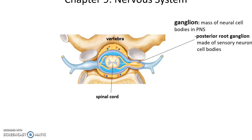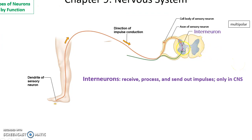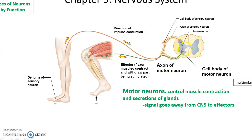A ganglion is a mass of neural cell bodies clumped together in the peripheral nervous system. An example is the posterior root ganglion, found in or near the vertebral canal. Types of neurons can also be defined by their function. Sensory neurons carry a sensation from the receptor up to the central nervous system — sometimes the sensory neuron itself is the receptor. This will then synapse with potentially an interneuron. Interneurons are the neurons found in the spinal cord and in the brain; they receive, process, and send out impulses, and are only found in the central nervous system. Motor neurons carry information out of the central nervous system to the effector to cause the response.